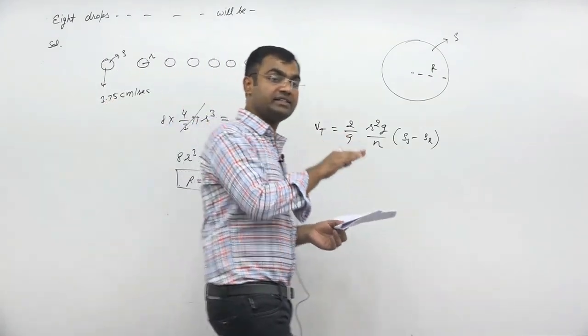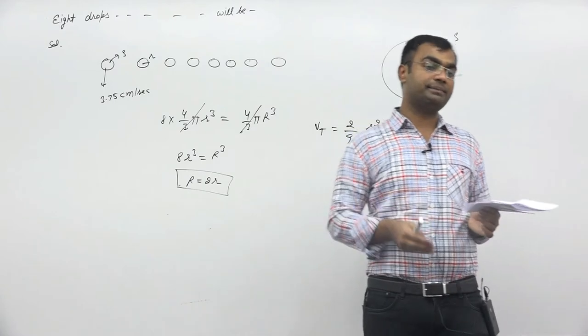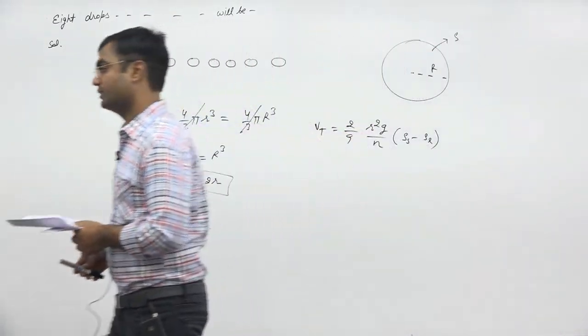When 8 drops are moving separately, they move at a lower terminal speed. But when 8 drops combine, the terminal speed increases. Understand?